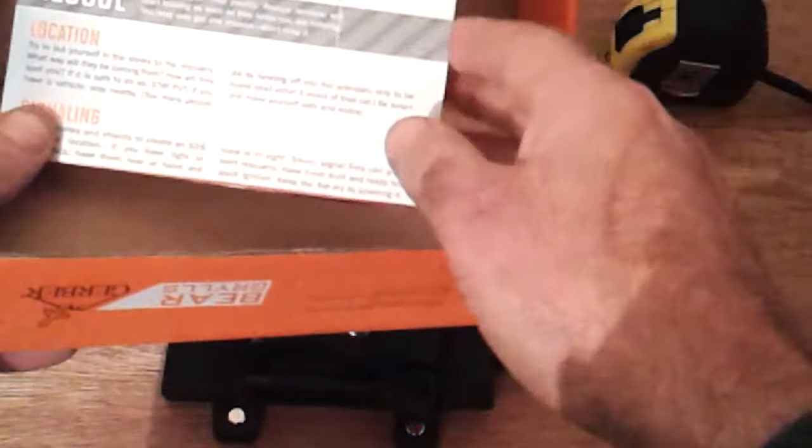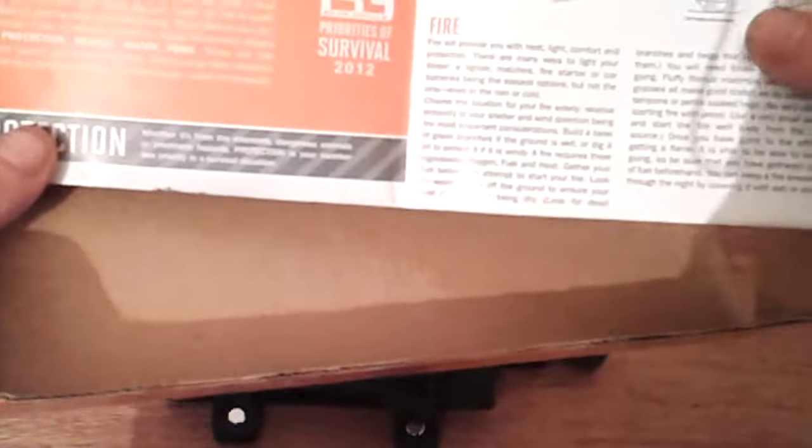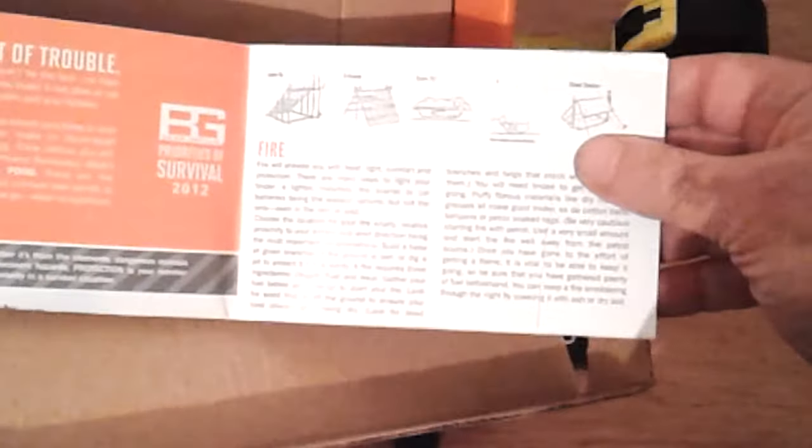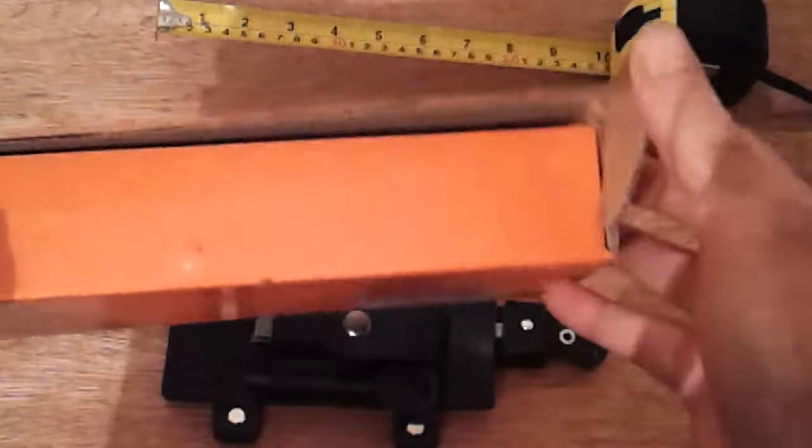Basically it's a survival skills leaflet, so if you're in a spot of trouble it shows you how to make fire, shelter, and stuff like that. That's by Bear Grylls. I'm not really into the Bear Grylls products, but I saw this knife and I thought, wow, this is a nice piece of kit.